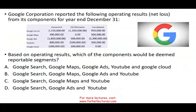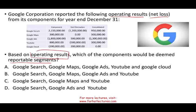Let's take a look at this question. We have Google Corporation — I selected Google because they run many other companies and have many segments, which makes the example a bit more realistic. They reported the following operating results, or net loss, from their components for the year ended December 31st. Google has Google Search, Google Maps, Google Ads, YouTube, and Google Cloud. I just made up these numbers, so these don't reflect any actual figures. They want us to compute which segments are reportable based on the operating results of the company.